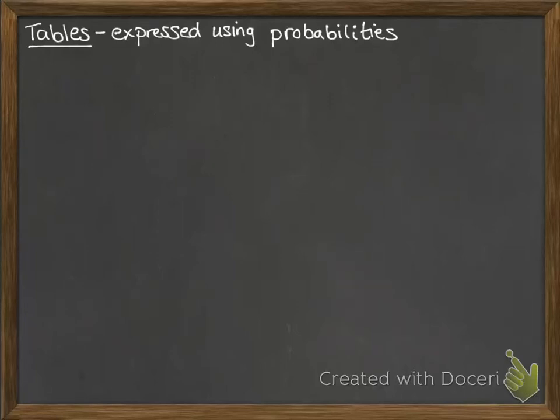We can also have tables of probability where the numbers in the table are the probabilities themselves, rather than the number of things that are happening, like you saw in the previous video.